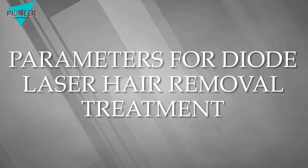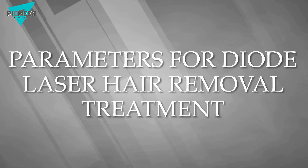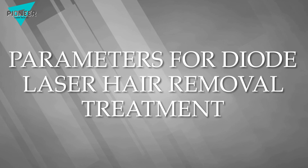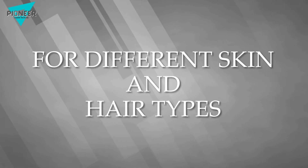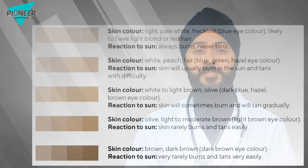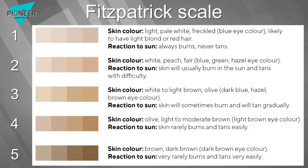Today, let's talk about parameters that need to be set in a diode laser hair removal machine for different skin and hair types. When choosing parameters for hair removal with a laser diode, it is important to consider the skin type of a patient according to the Fitzpatrick scale. Based on the Fitzpatrick scale, we can divide skin types into five types, each representing a different tone of the skin.